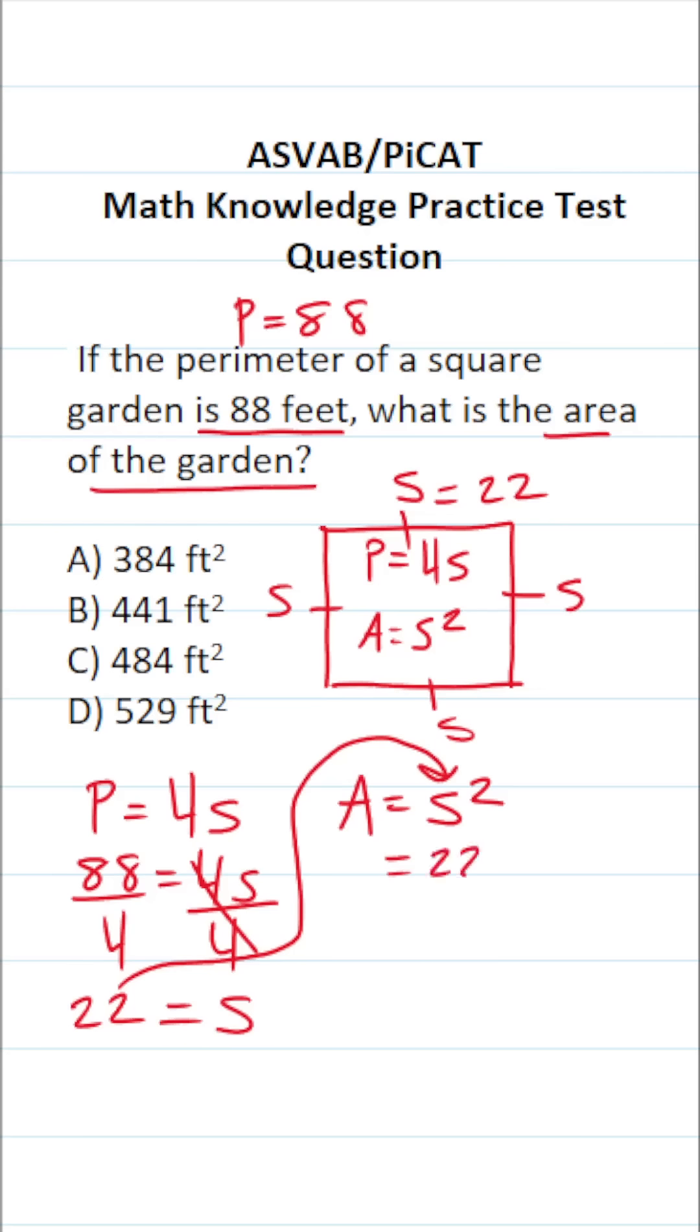This becomes 22 squared. 22 squared is the same thing as 22 times 22. And so as not to make any mistakes, I'm going to work this off to the side.